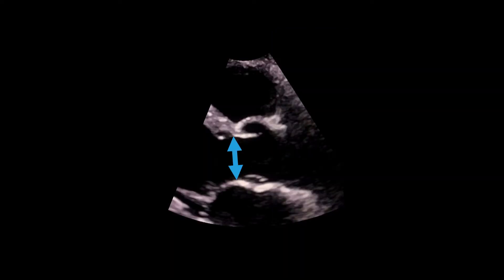The third piece of information needed is a measure of the diameter of the LVOT. This measurement is probably best made at the annulus level where there are clear landmarks, though some prefer to aim for a similar position to where the pulsed wave Doppler recording has been made. In order to improve measurement accuracy, a zoomed parasternal long axis view should be used.